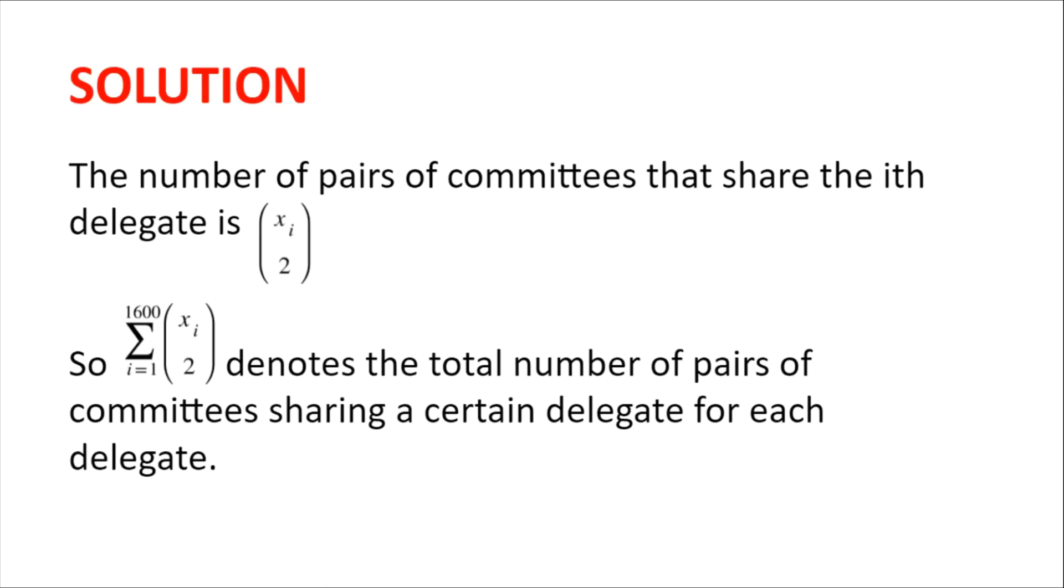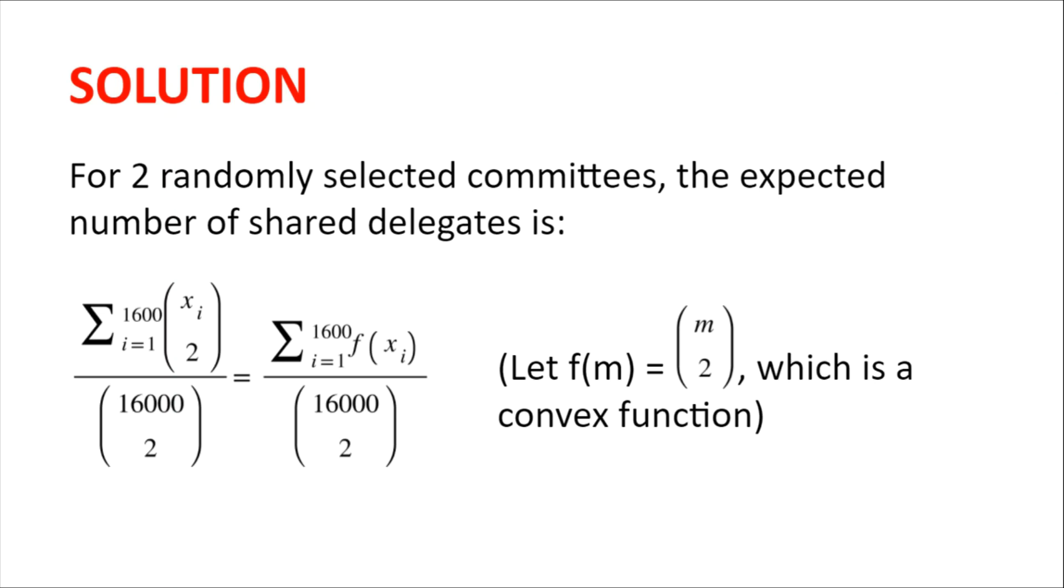So to get the expected value of number of shared delegates for two randomly selected committees, we need to divide this by the total number of pairs of committees, which is 16,000 choose two. So we get the sum of all the xis choose two divided by 16,000 choose two.